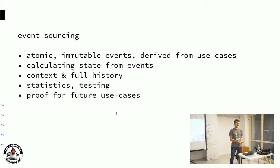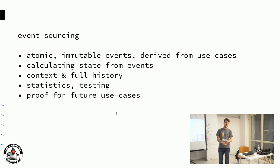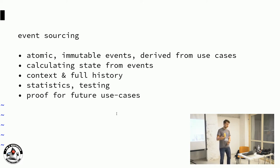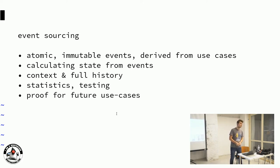These events are atomic and immutable — they are facts that happened in the past and are the core of the system. This comes with quite a few benefits: we naturally have the full context and history information. Everything that happens to your system is stored at its core. You can use this for debugging or statistics — you can look at everything that happened and reproduce how the system got into its current state. You can also use all these events for system tests because they perfectly represent what happened in your production system.